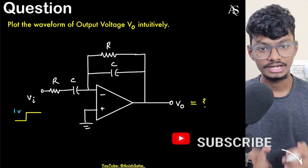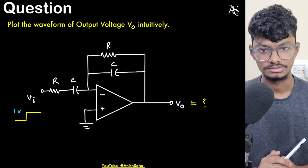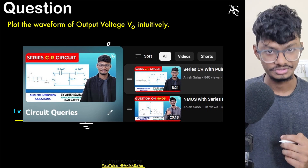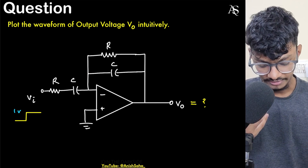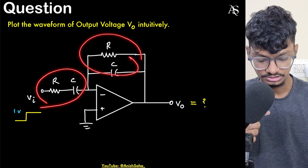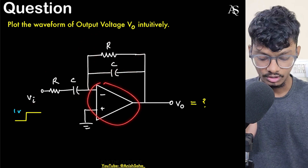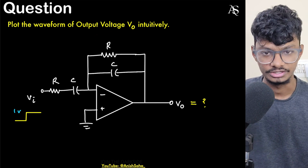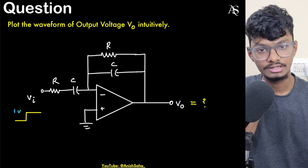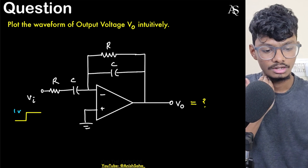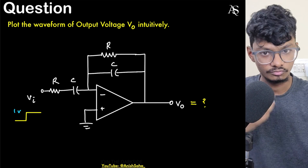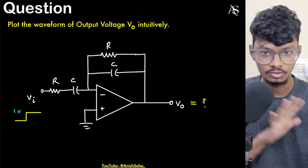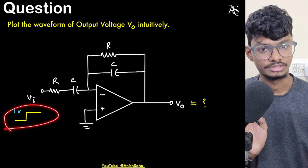Hey everyone, welcome back to my channel. I'm Anish and today we'll solve another interesting question on op-amps. In this question, we have been given a series RC circuit and a parallel RC circuit — the parallel RC is in the feedback and the series RC is the input circuit. They want us to plot the output voltage waveform Vo intuitively, without going into Laplace or computations. At first glance it may look like a second-order circuit, but let's see how we can plot it. We'll assume the op-amp is ideal with no saturation voltages present.